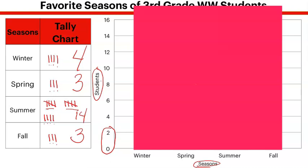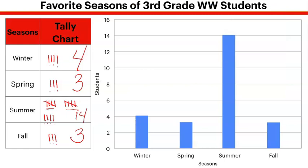Make sure when creating your graph you have labels, a title, and intervals. Looking at the completed graph behind it — winter goes to four, matching our tally. Spring and fall both got three votes, going past two but not quite to four. Summer went all the way up to the fourteen line.